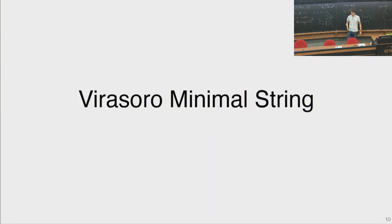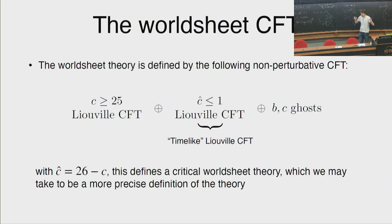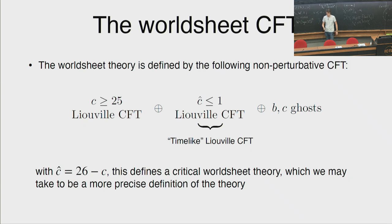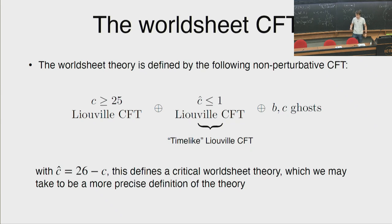Let me get started. First I'll talk about time-like Liouville coupled to space-like Liouville, which we called the Virasoro minimal string. So recall we're looking at this worldsheet theory: a Liouville theory where the matter theory is this time-like Liouville theory coupled to BC ghosts. Let me remind you what Liouville theory and time-like Liouville theory are.